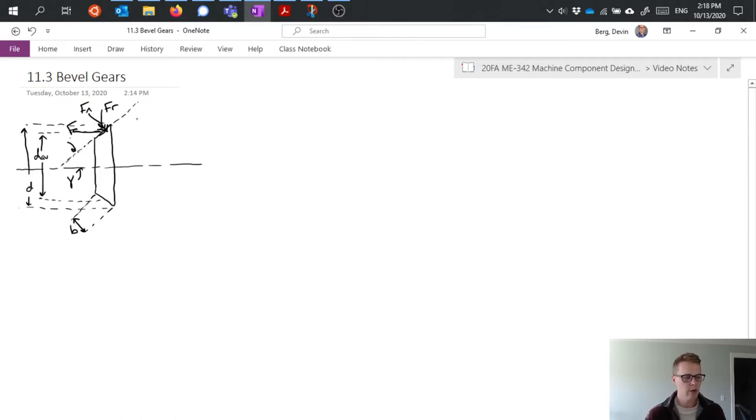Of course we would also have our transmission force, but in this case our transmission force is perpendicular to the page, so I'm not drawing it out here, but it's coming into and out of the screen as we're looking at it. We still have a pressure angle phi, generally around 20 degrees as a standard for that.